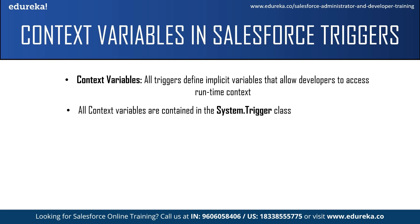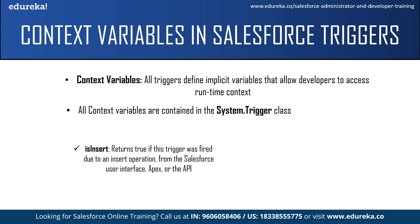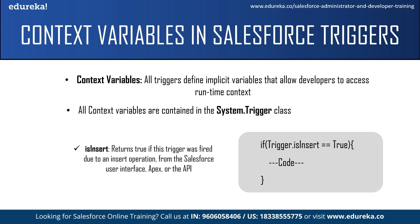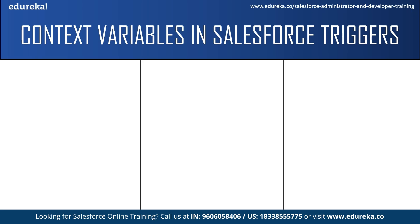All context variables are contained in the System.Trigger class. The first context variable is isInsert — this returns true if the trigger was fired due to an insert operation from the Salesforce user interface, Apex, or the APIs. For example: if Trigger.isInsert == true, only then will that set of code be executed. It checks for a condition, and only if it is true will the code execute. The next context variable is isUpdate — this returns true if the trigger was fired due to an update operation.